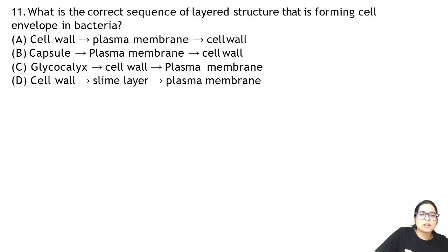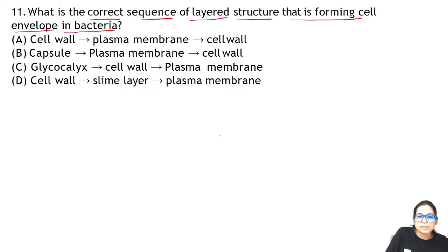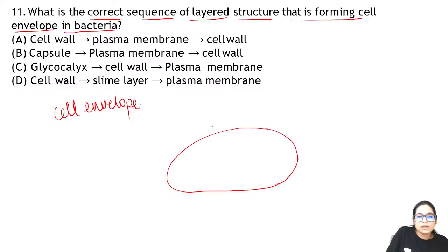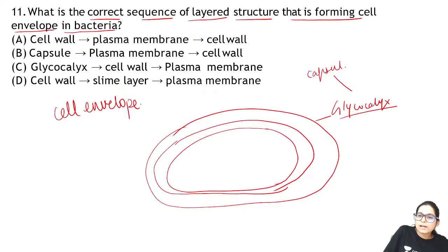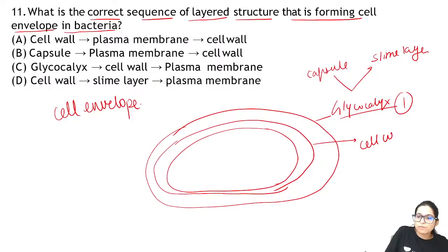Question 11: correct sequence of the layered structure forming the cell envelope in bacteria. The cell envelope in prokaryotes or bacteria has 3 layers. The outermost layer is glycocalyx — if it is thick and tough, it is called a capsule; if slimy, it is called a slime layer. Then comes the cell wall, and the innermost is the plasma membrane. So the answer is option 3.